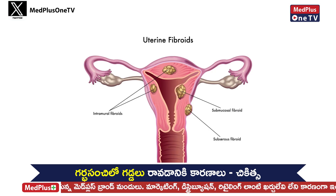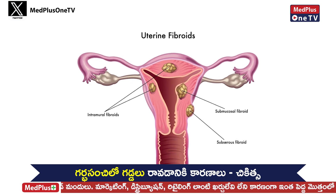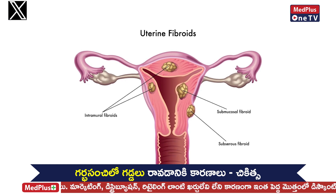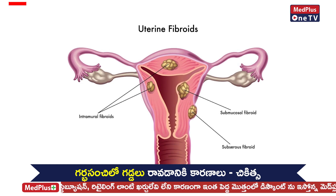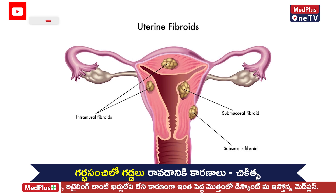If you have a late menarche, there are a lot of chances. If you have a family history — first-degree relatives — there are a lot of fibroids.